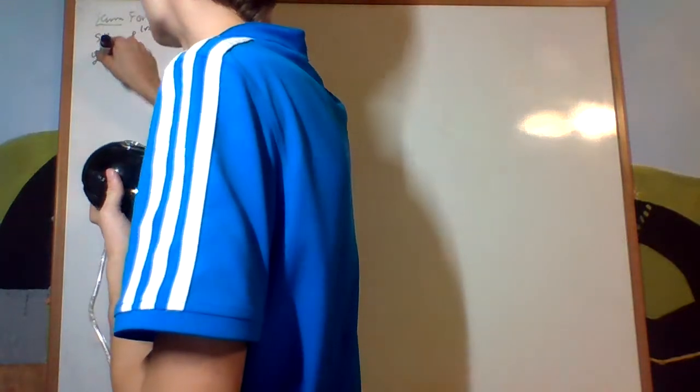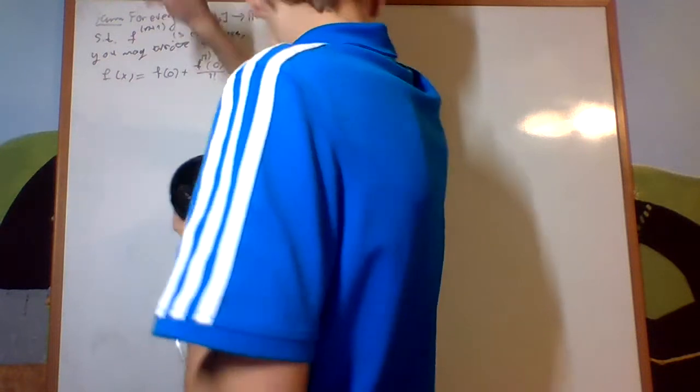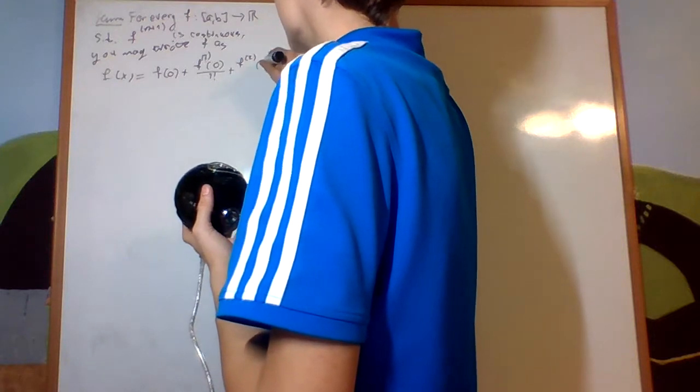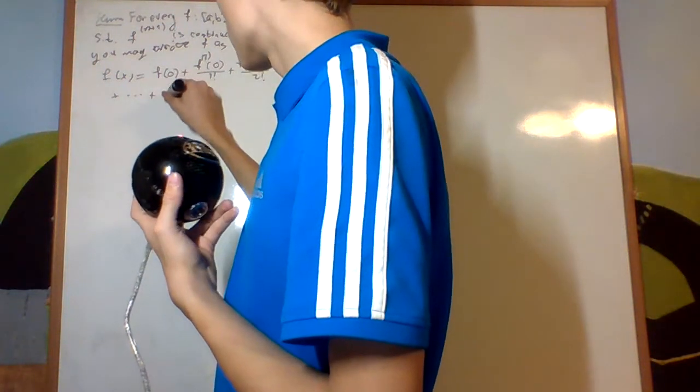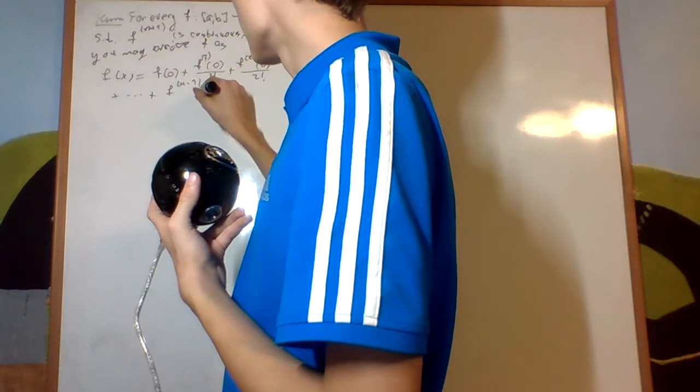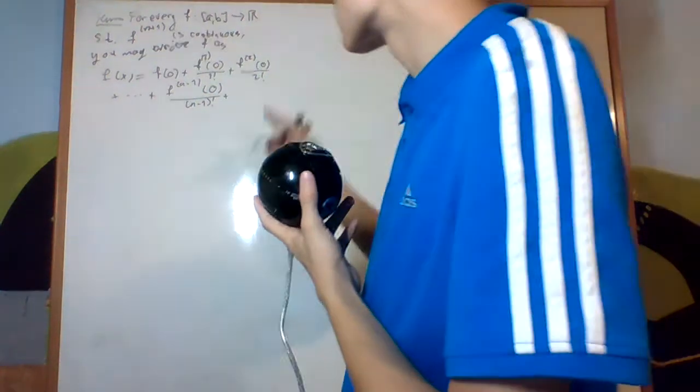you may write f as f of x equal to f of 0 plus f prime of 0 over 1 factorial, I'll write it f first derivative plus f second derivative at 0 over 2 factorial plus plus all the way up until the n minus 1 factorial at 0 over n minus 1 factorial and then plus, and here's the key term,